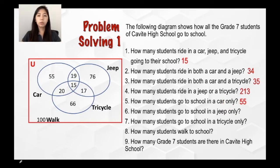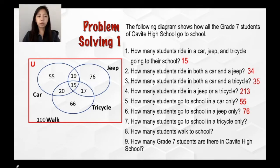For the sixth question, how many students go to school in a gyp only? This time, upon looking at the set of gyp, you're going to look at the number without any intersection, which in this case is 76. So there are 76 students who go to school in a gyp only. For the seventh question, how many students go to school in a tricycle only? Looking into the set of tricycle, locate the number without any given intersection, which is 66. So there are 66 students who go to school in a tricycle only.